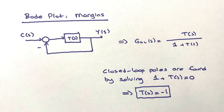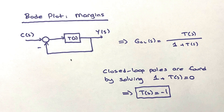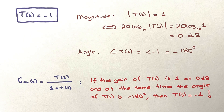I would like to talk about this closed-loop system. T(s) is your loop transfer function or forward transfer function. C is the input, Y is the output, and you have this unity feedback configuration. The corresponding closed-loop system transfer function from Y to C is T(s) divided by one plus T(s). You can find the closed-loop poles by setting one plus T(s) equal to zero, or equivalently T(s) equal to minus one. If you have a different block diagram configuration, once you write the closed-loop system in this form, you can still use one plus T(s) for the following discussion.